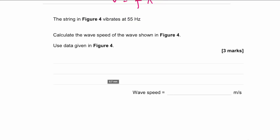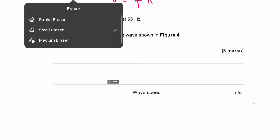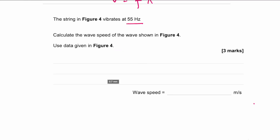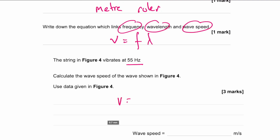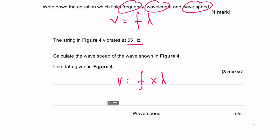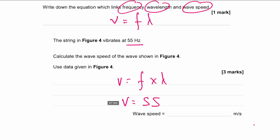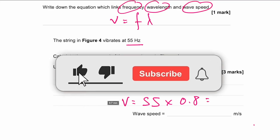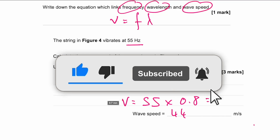The string in figure four vibrates at 55 hertz — calculate the wave speed. We have the formula: wave speed equals frequency multiplied by wavelength. The wavelength was 80 centimeters, so you must convert it to 0.8 meters. That gives 55 hertz multiplied by 0.8 meters, which equals 44 meters per second.